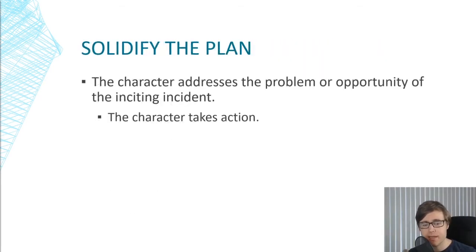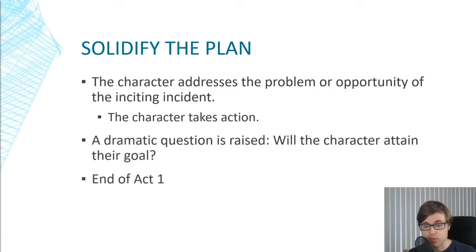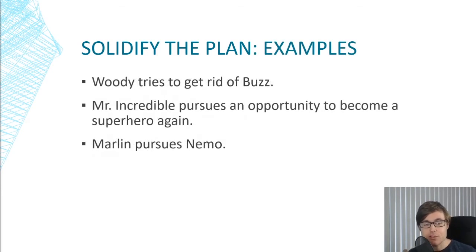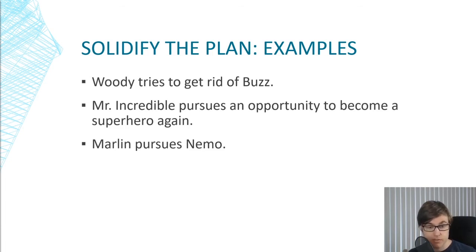The next step in story structure is where the character needs to respond to the problem or opportunity of the inciting incident. It's where they first start to take action and their plan typically becomes concrete. How are they going to respond to that big event that shook up their life? This gives rise to a dramatic question: will the character attain their goal — will they get what they want? This is the end of Act One. In Toy Story, Buzz has threatened Woody's position as top toy, so Woody wants to get rid of Buzz. In The Incredibles, Mr. Incredible wants to pursue the opportunity to become a superhero again. In Finding Nemo, Marlin had Nemo taken away, so the plan is to go find Nemo — and that's the central question: will Marlin find Nemo in time?